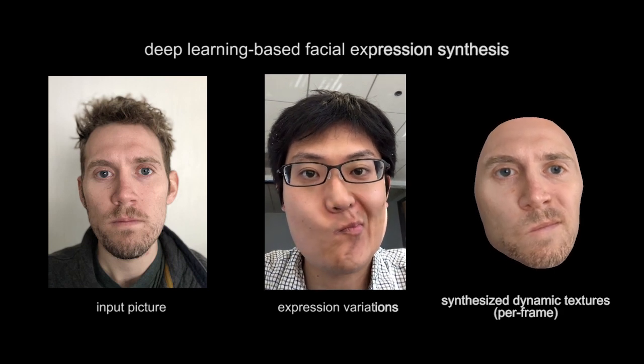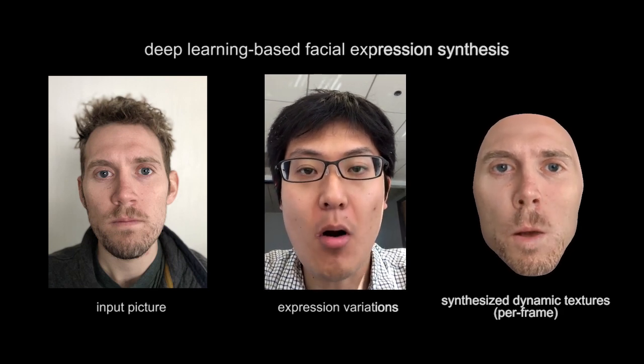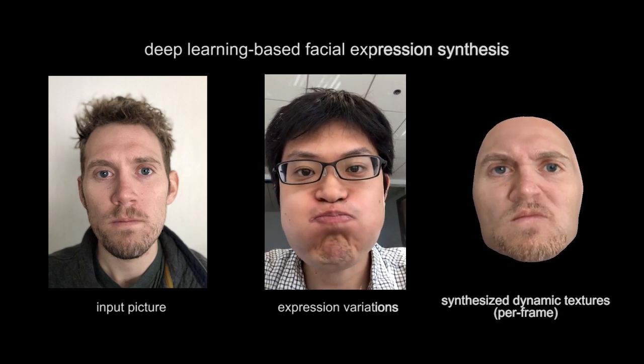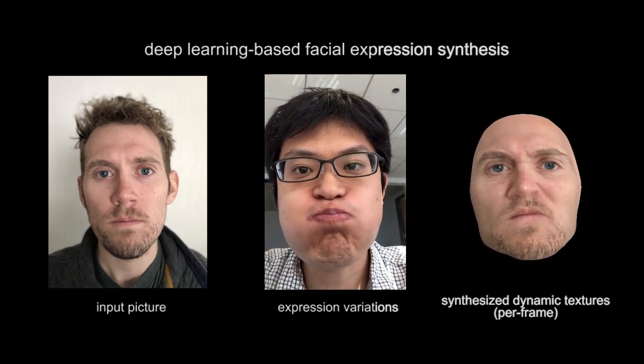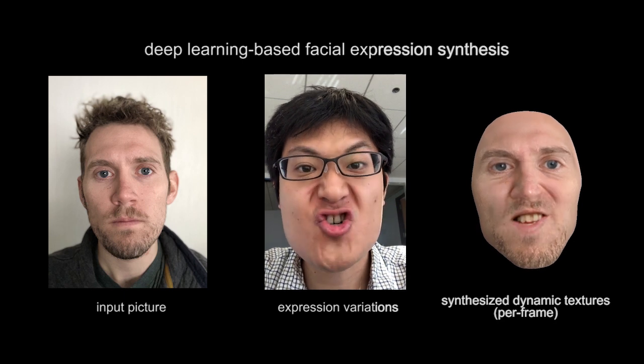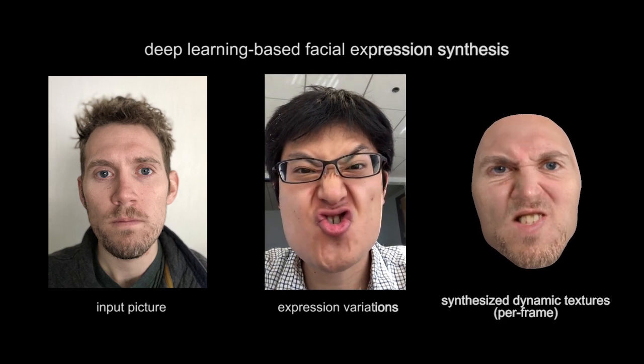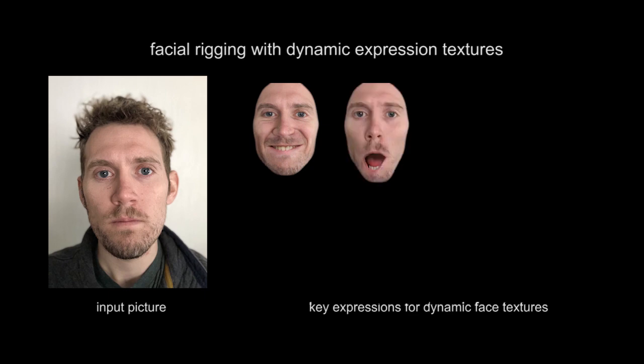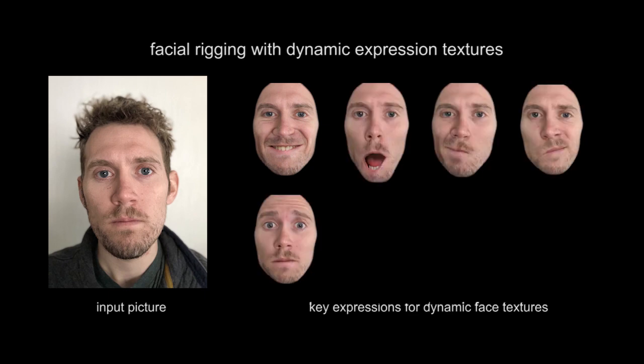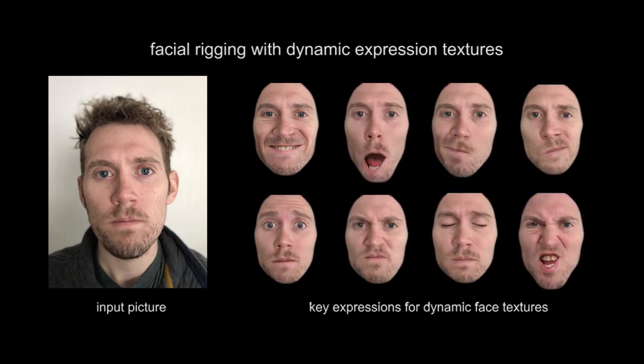Given a neutral picture of the subject, we can use a deep neural net to synthesize arbitrary facial expressions, as shown on the right. Here, we show a set of eight key expressions that are used to achieve real-time dynamic avatars.